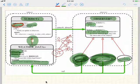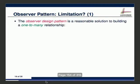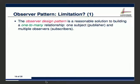Now let's go over some limitations of the observer pattern. The observer pattern is quite a suitable solution for a one-to-many relationship — one subject and multiple subscribers. However, if you try to generalize this to many-to-many, which means many subjects and many observers, you will see that the observer pattern has some limitations. I'll show you why.